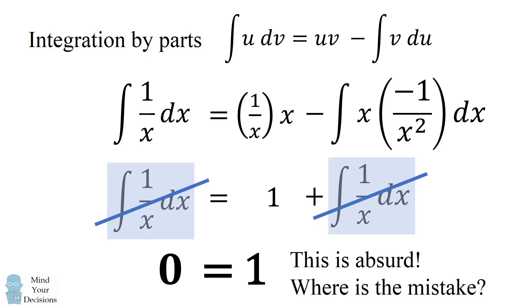Now of course this is an absurd conclusion. So the question is where is the mistake in this supposed proof that 0 is equal to 1? Take a moment to review this proof carefully. When you're ready, keep watching the video for an explanation of where the mistake is.